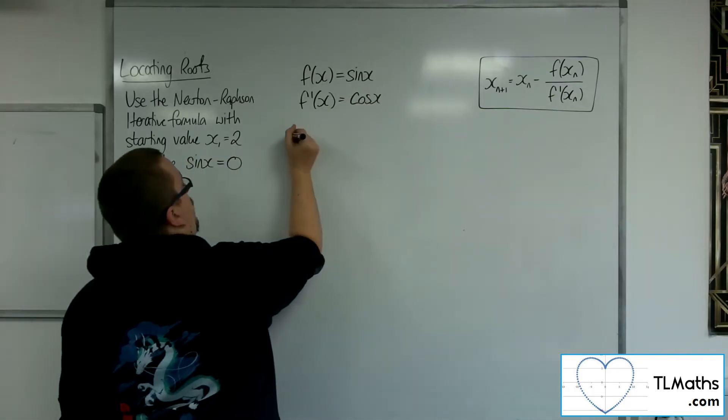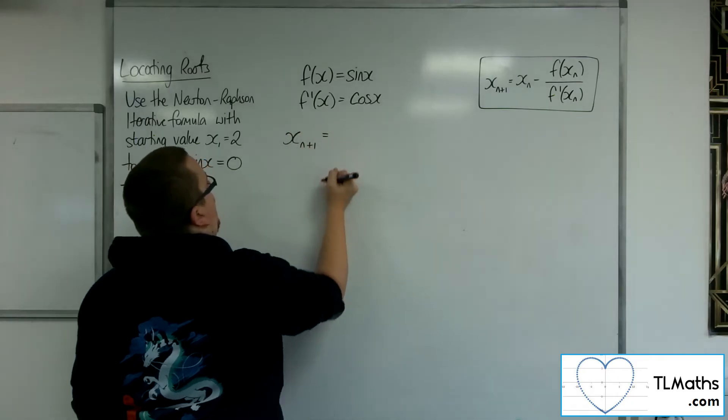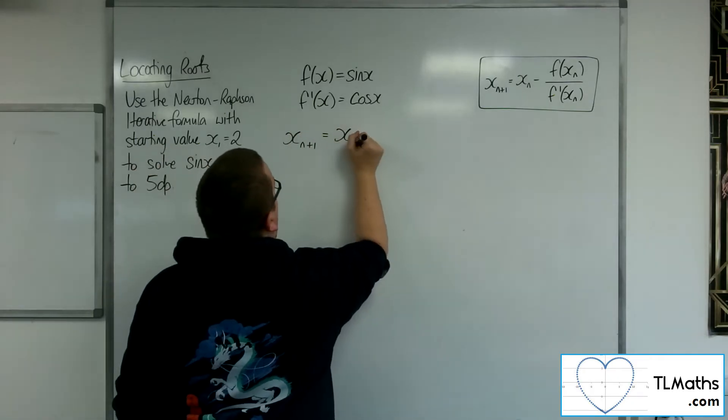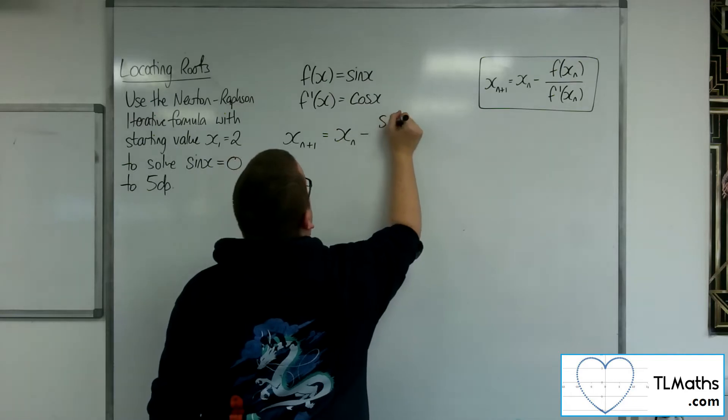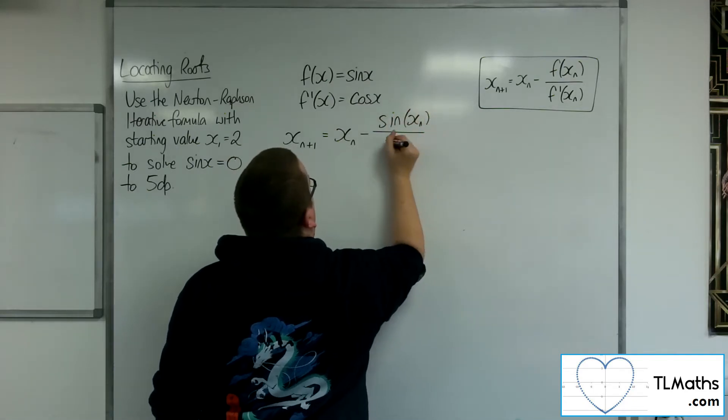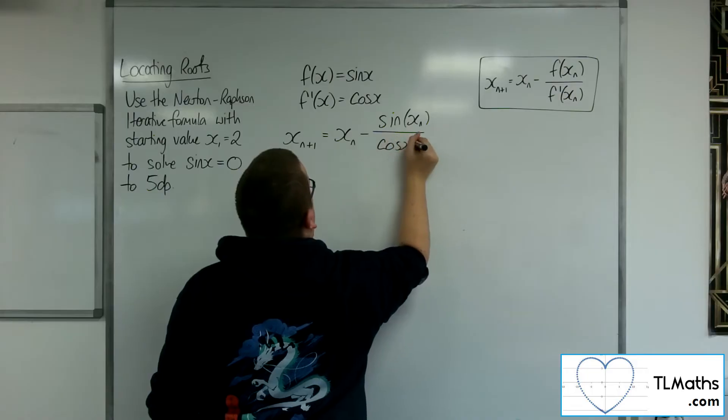OK, so the iterative formula is xn plus 1 is equal to xn take away sine of xn over cosine of xn.